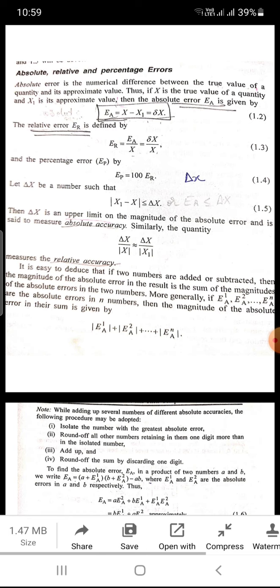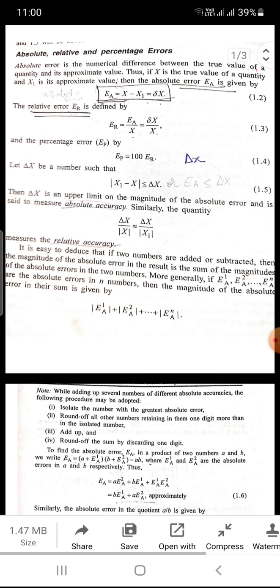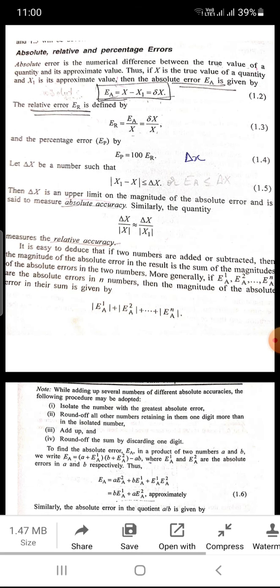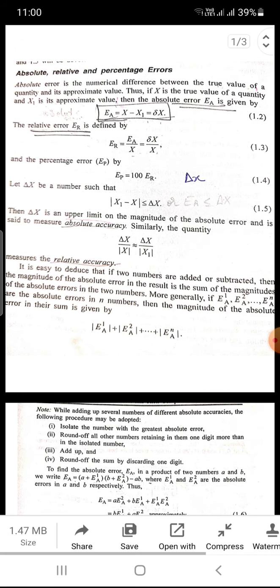Thus if x is the true value of a quantity and xi is its approximate value, then the absolute error ea will be given by ea equals x minus xi. Let us suppose it is delta x.